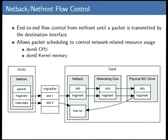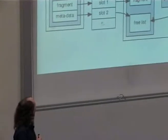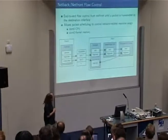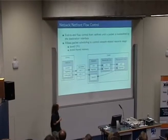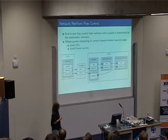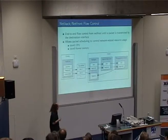I want to talk briefly about how flow control works in Xen — this is not how it works in KVM. We have our guest with its net front driver sending packets, and on the other side we have the host DOM0, with a magic ring buffer in between. A packet has a header, a fragment, and some metadata, consuming two ring buffer slots. The metadata gets processed straight away and goes back on the free list immediately.